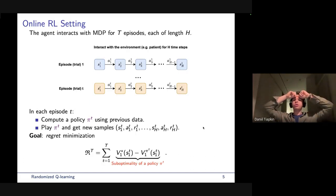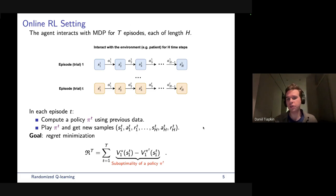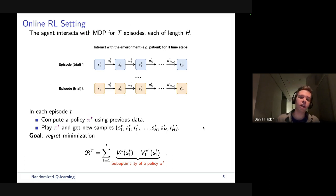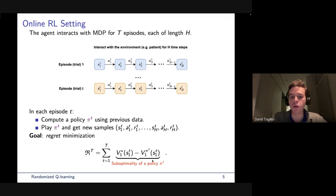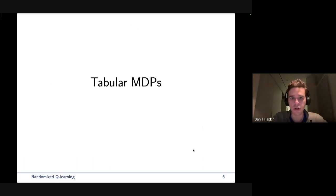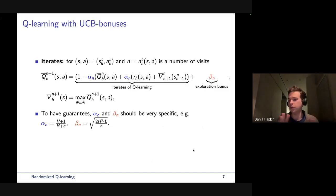At the end of the day, we're in a setting where we don't know the transition kernel — we know only the reward function. We want to find the optimal policy as fast as we can, but at the same time we don't want to suffer too much during the learning process. For this goal, we define the regret minimization problem: minimizing the sum of suboptimality of each policy played during each episode, where each policy is computed given all previous data. This is a very classical setting. Now we move to tabular MDPs and recall how to do exploration with the Q-learning algorithm.